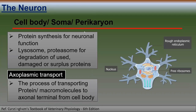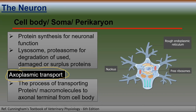The cell body, or soma, contains the nucleus and all the organelles necessary for neuronal functioning, including ribosomes, Golgi bodies, and mitochondria, where protein synthesis occurs. It also has lysosomes and proteasomes, which are used for degradation of used, damaged, or surplus proteins.